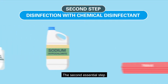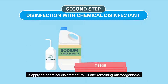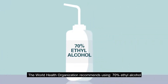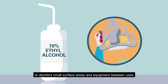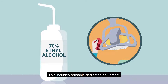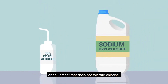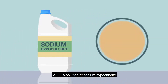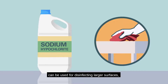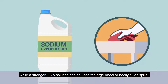The second essential step is applying a chemical disinfectant to kill any remaining microorganisms. The World Health Organization recommends using 70% ethyl alcohol to disinfect small surface areas and equipment between uses. This includes reusable dedicated equipment or equipment that does not tolerate chlorine. A 0.1% solution of sodium hypochlorite can be used for disinfecting larger surfaces, while a stronger 0.5% solution can be used for large blood or bodily fluid spills.